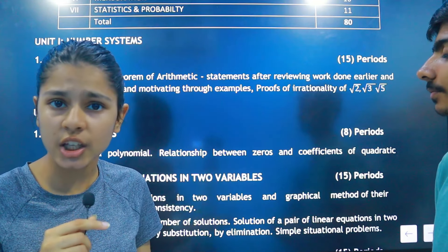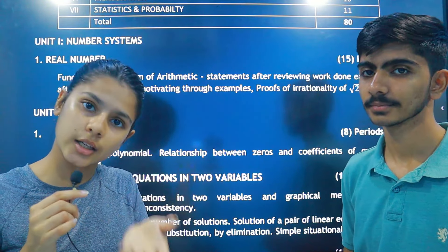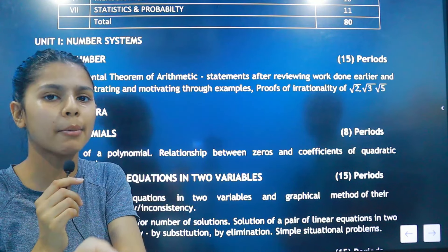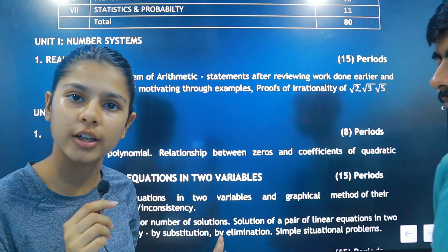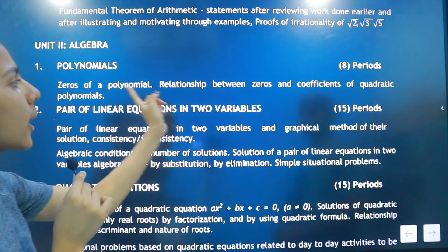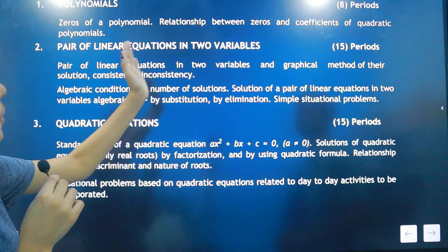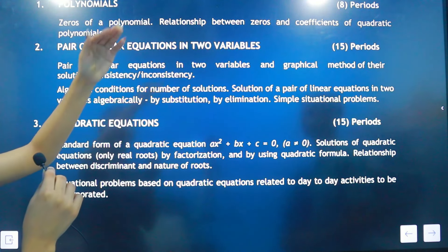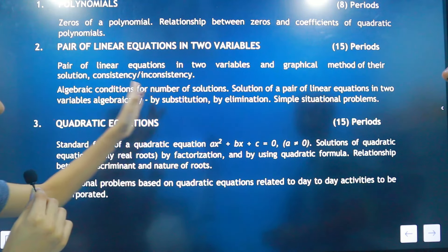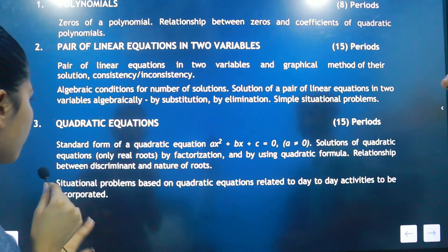If there are no changes from last year, you don't have much to fear. Note that Euclid's Division has already been removed from the syllabus. In the polynomial chapter, the topics are zeros of polynomials and the relationship between zeroes and coefficients. In the third chapter, there is a pair of linear equations: graphical method and algebraic method, including substitution, elimination, and related situational problems.